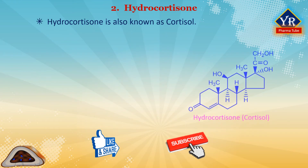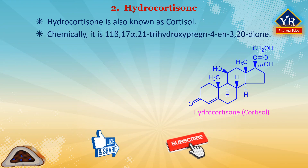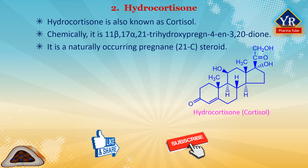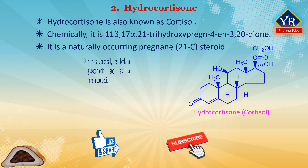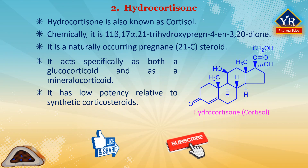Hydrocortisone. Hydrocortisone is also known as cortisol. Chemically, it is 11-beta,17-alpha,21-trihydroxypregn-4-ene-3,20-dione. It is a naturally occurring pregnane steroid. A variety of hydrocortisone esters exist and have been marketed for medical use. It acts specifically as both a glucocorticoid and as a mineralocorticoid, and has low potency relative to synthetic corticosteroids.